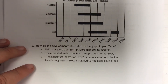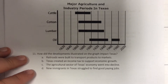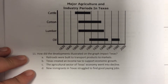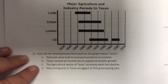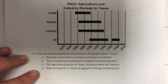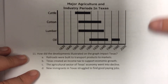Question 11: How did the development illustrated in the graph impact Texas? Railroads were built to transport products to market; Texas created an income tax to support economic growth; the agricultural sector of Texas' economy went into decline; new immigrants in Texas struggled to find good-paying jobs.